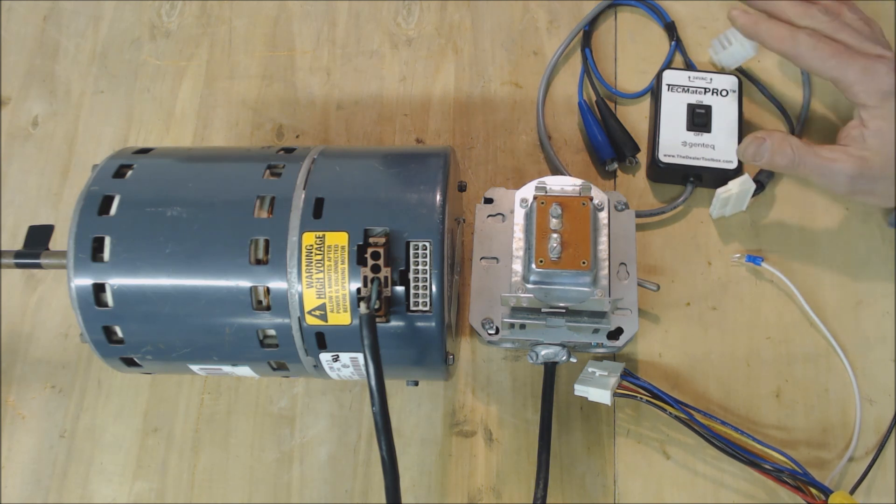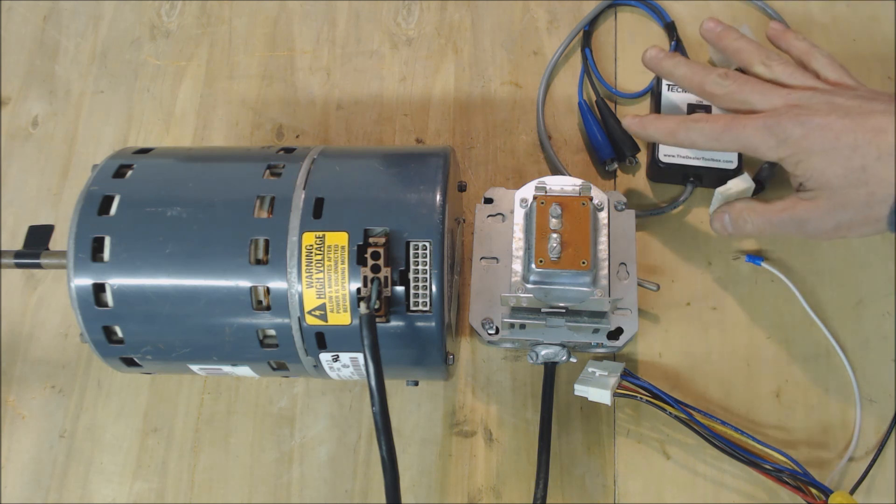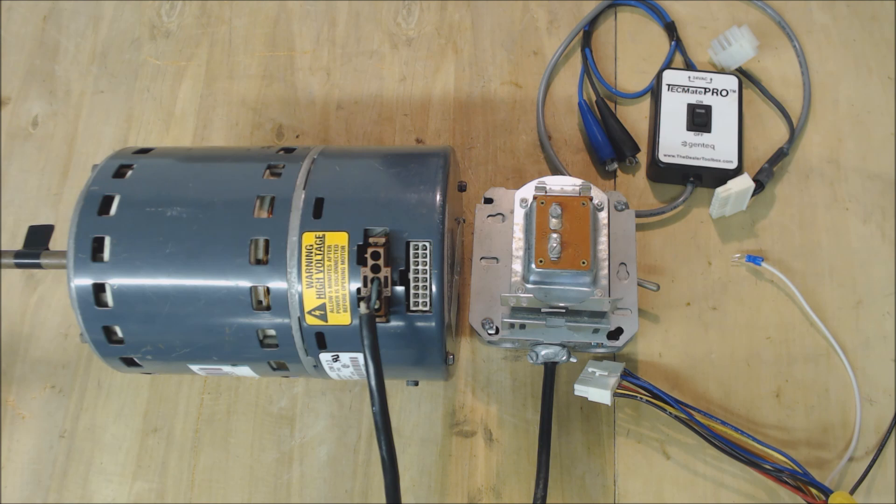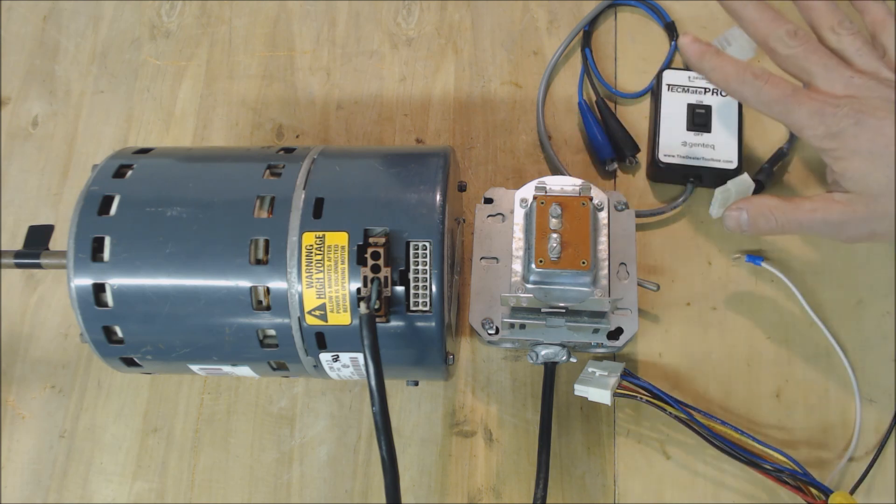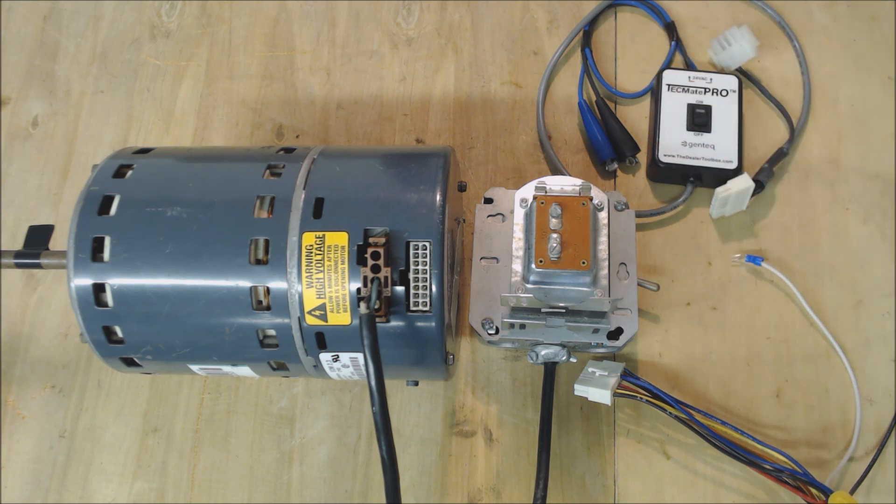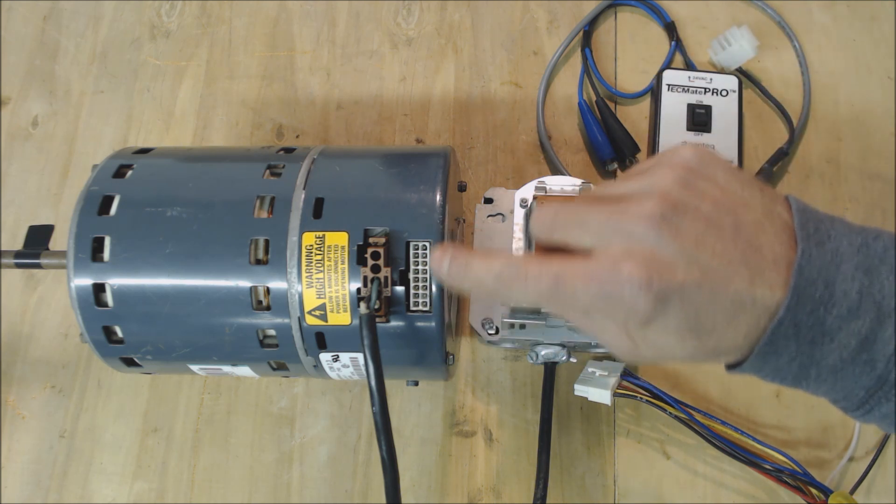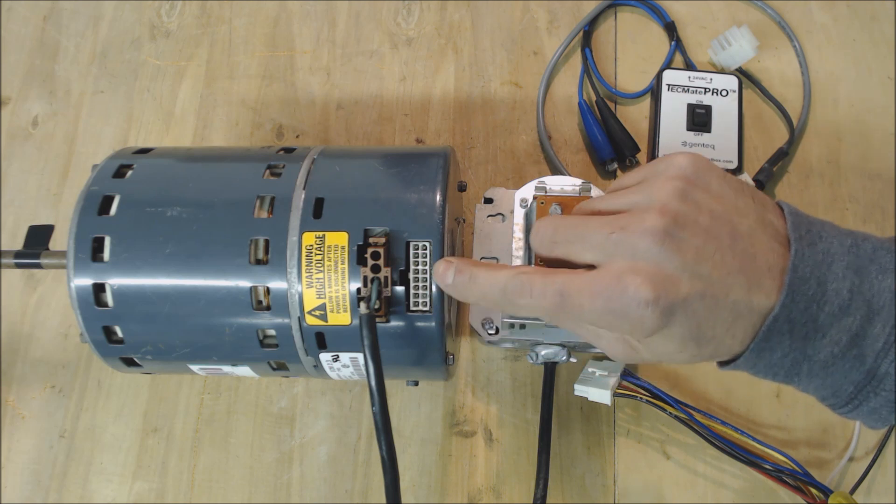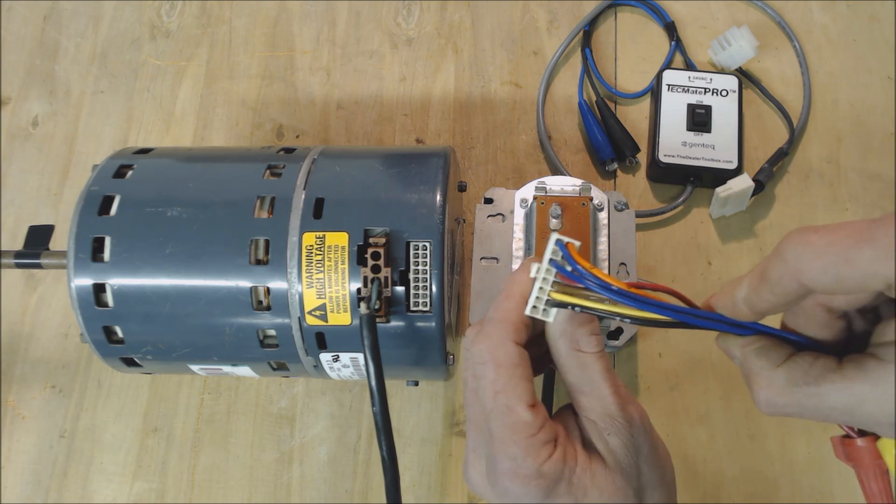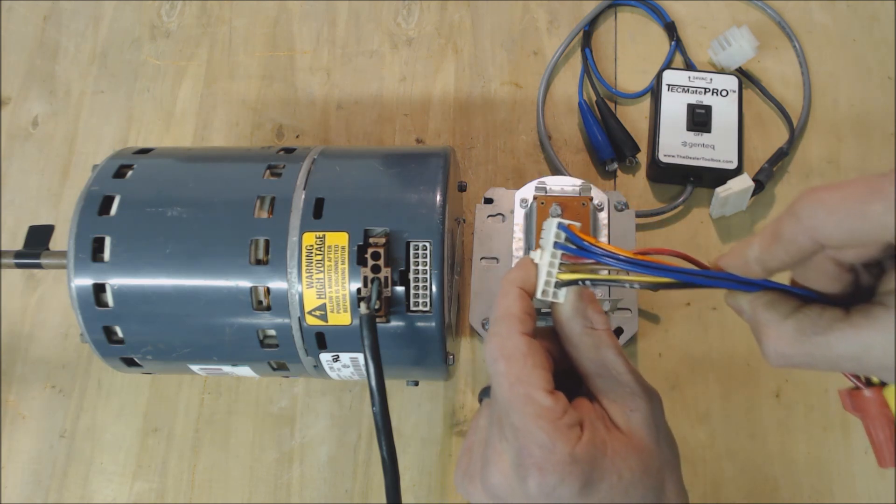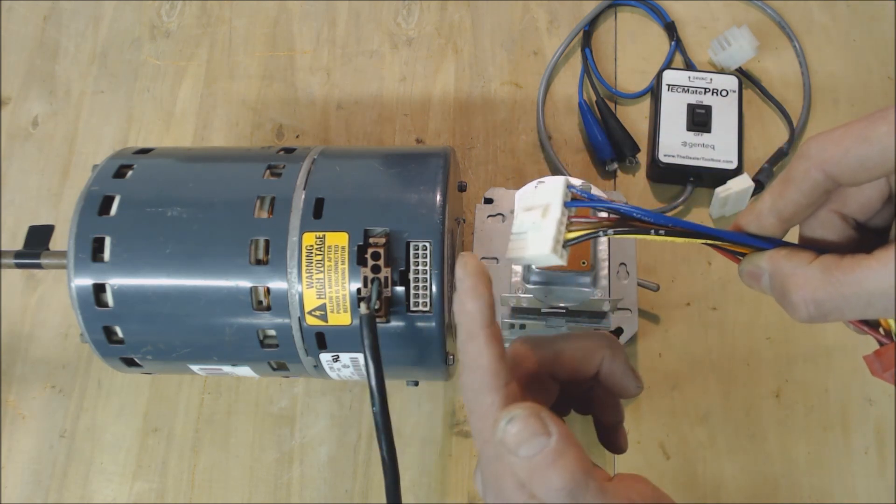So on my other videos I've gone over how to test the ECM 3.0 without a tester like this. I've also gone over how to test an X13 blower motor without any other type of testing device. In this case since this is a 16 pin connector this is a little bit harder to jump out and I want to show you which pins you can connect a spare connector to in order to basically make a tester of your own.